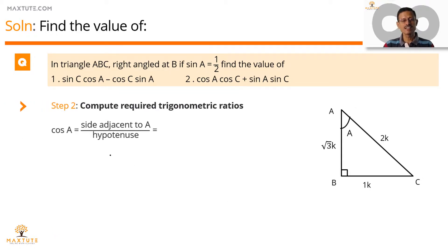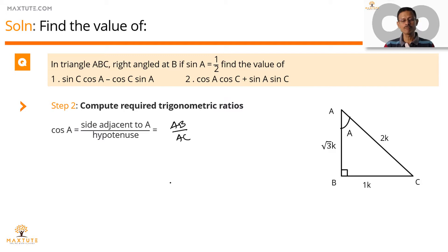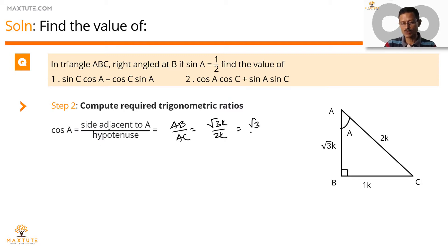Let's start with cos A. Cos A equals the side adjacent to A divided by the hypotenuse. The side adjacent to A is AB, and the hypotenuse is AC. AB measures root 3K and AC measures 2K, so cos A equals root 3K by 2K which equals root 3 by 2.